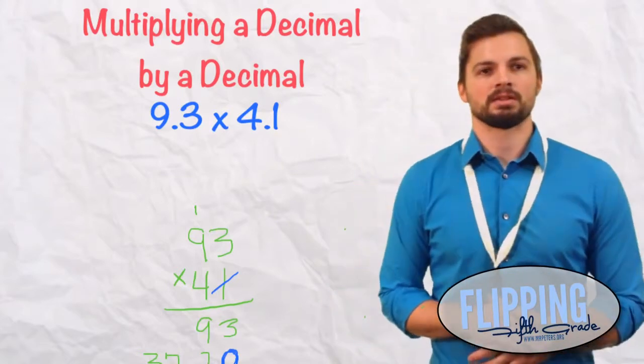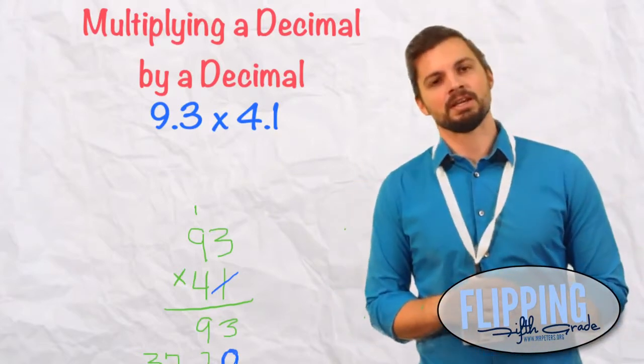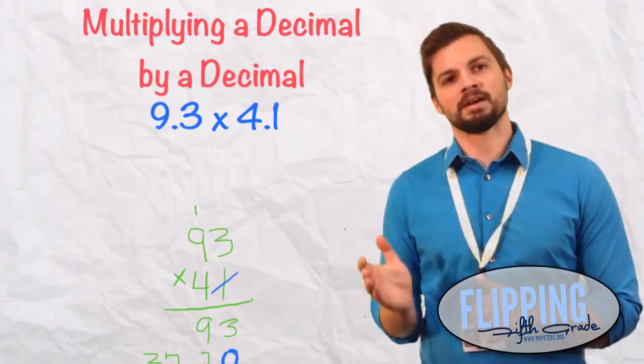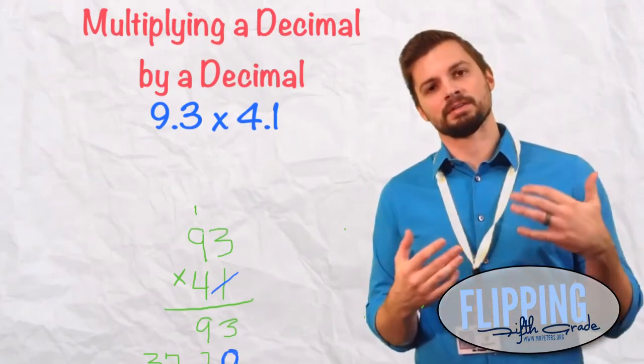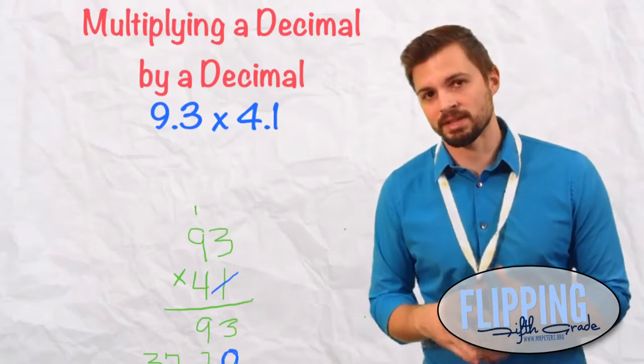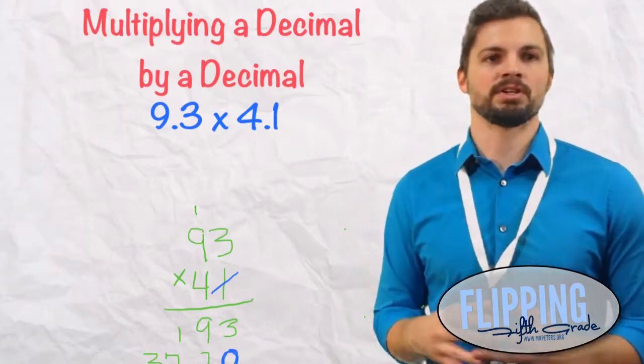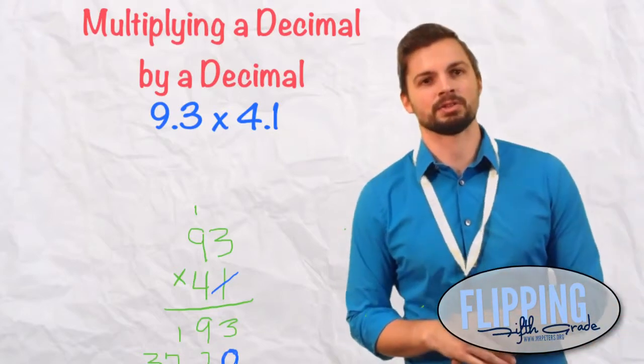We need to add those. So 3 plus 0 is 3. 9 plus 2 is 11. We put down that 1, carry the 1, and 7 plus nothing is 7, plus 1 is 8, and 3 plus nothing is 3. So we get the answer of 3,813.